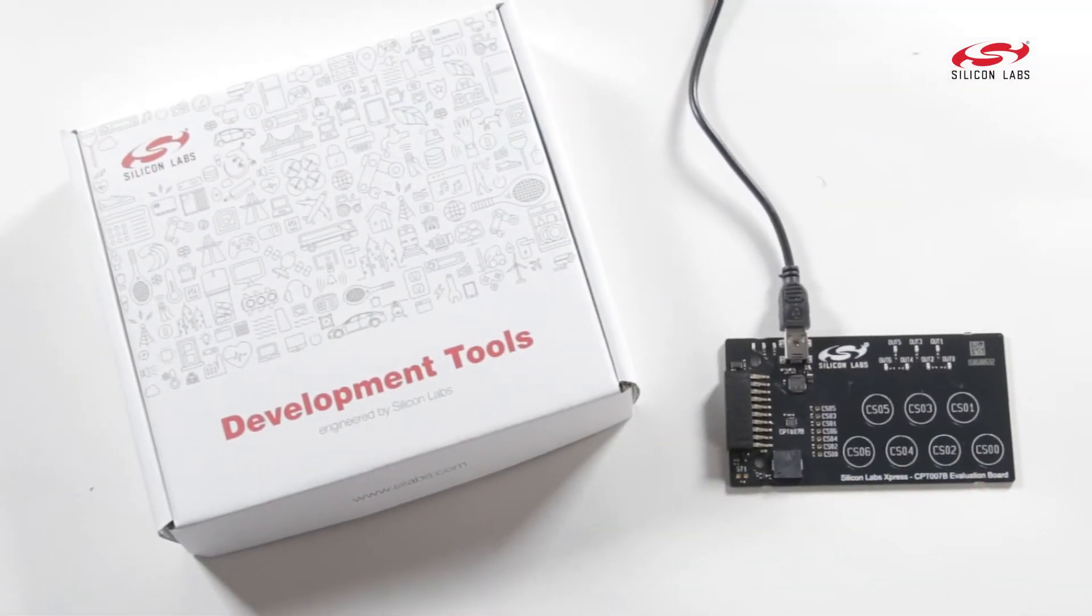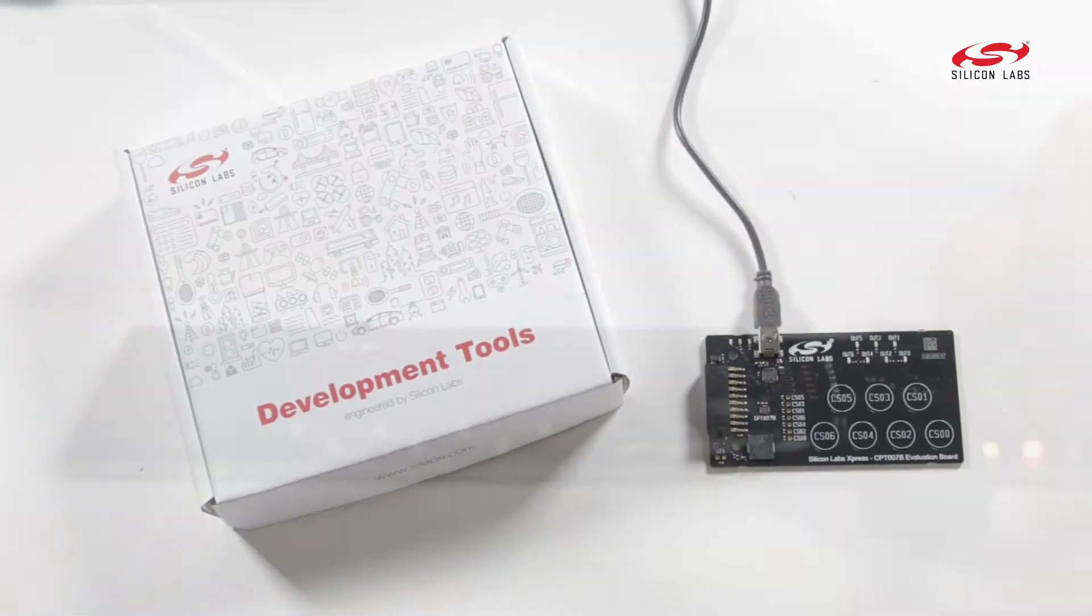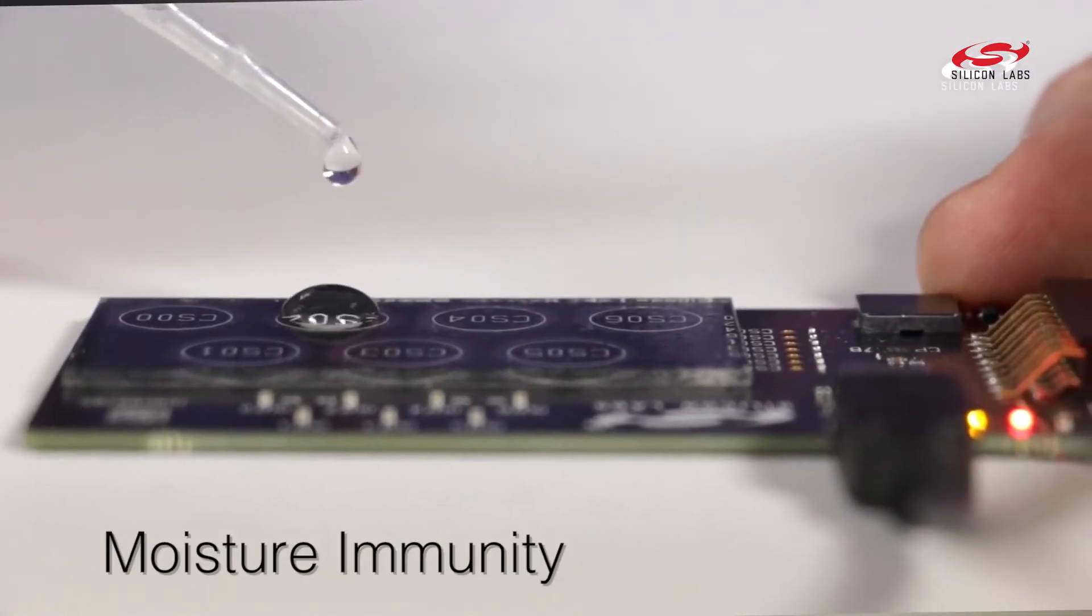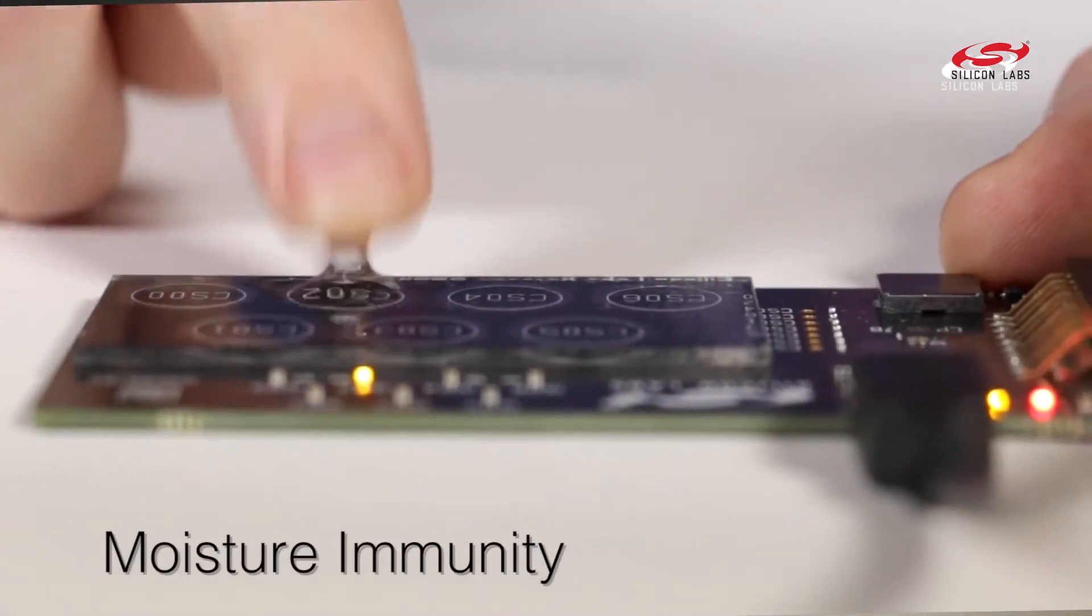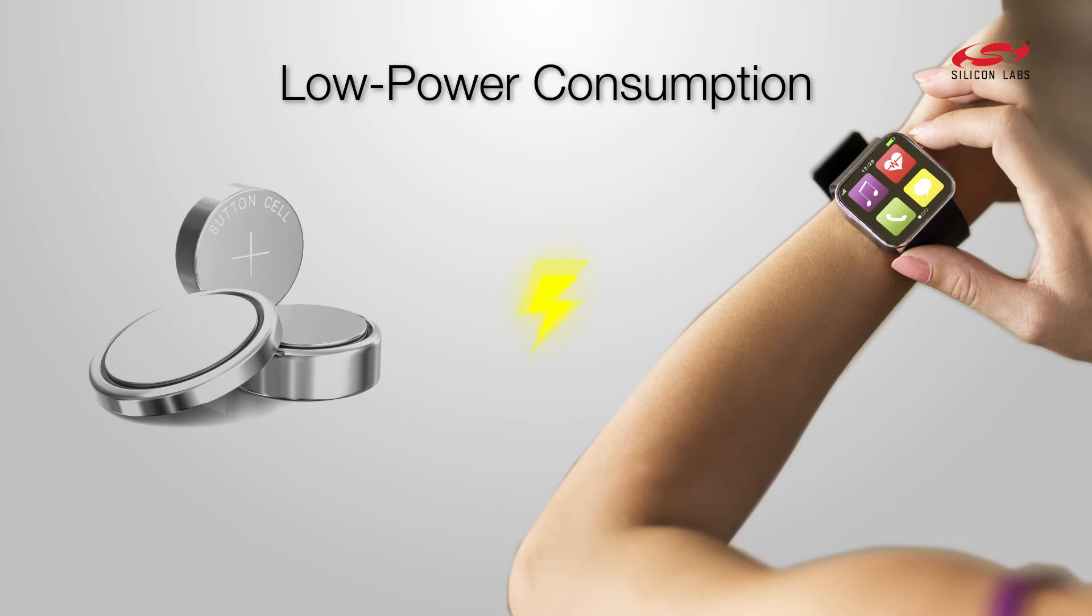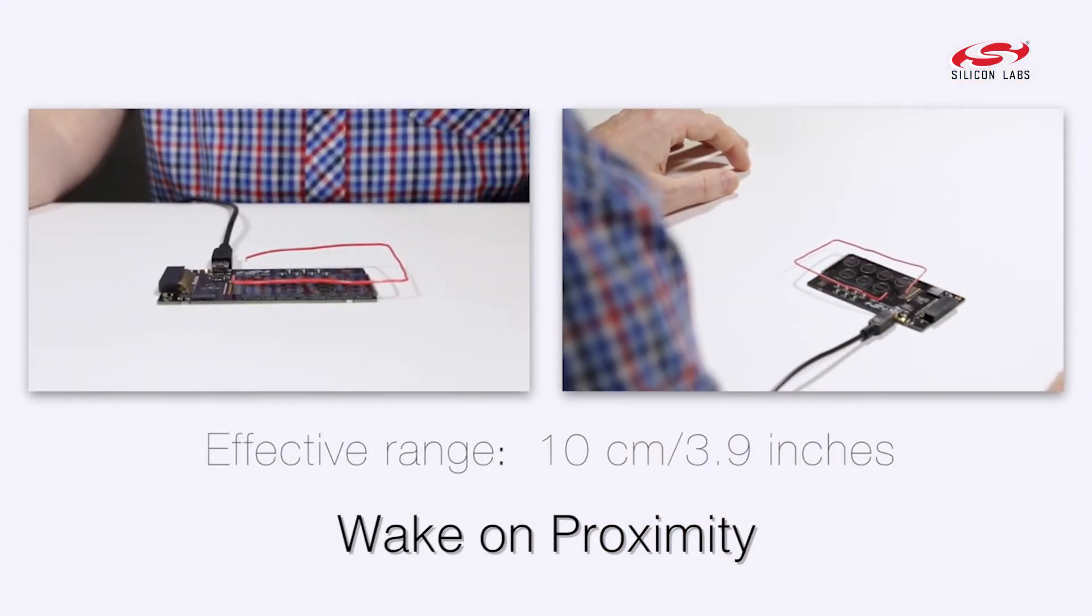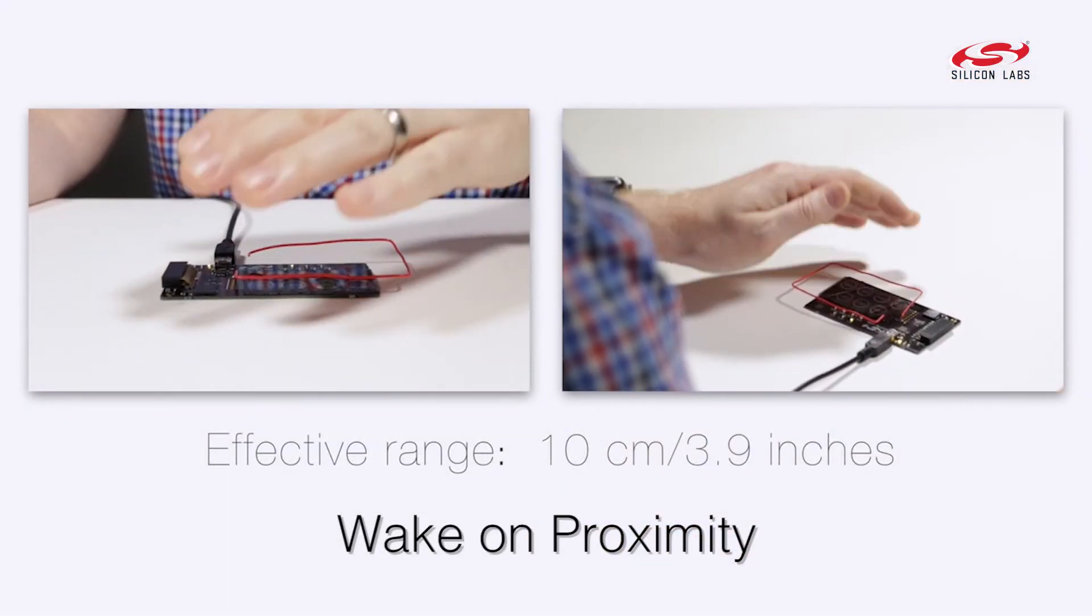Touch Express has a wide variety of features, including moisture immunity, which allows for the detection of touches to go uninhibited by the presence of water, extremely low power consumption, making Touch Express ideal for battery-powered devices, and wake-on proximity, which allows the device's screen and other features to wake when the user's hand comes close to the device.